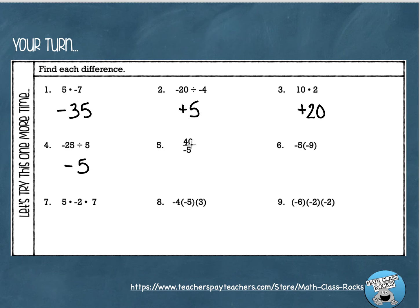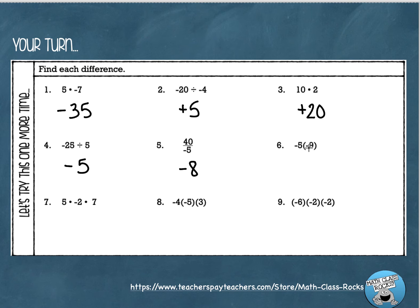For number 5, here's one that looks like a fraction — I've got a positive and a negative, so different signs, meaning my answer is negative. And 40 divided by 5 is 8. Number 6, look at these signs — they're the same. I've got two negatives, which gives me a positive answer. And 5 times 9 is 45.